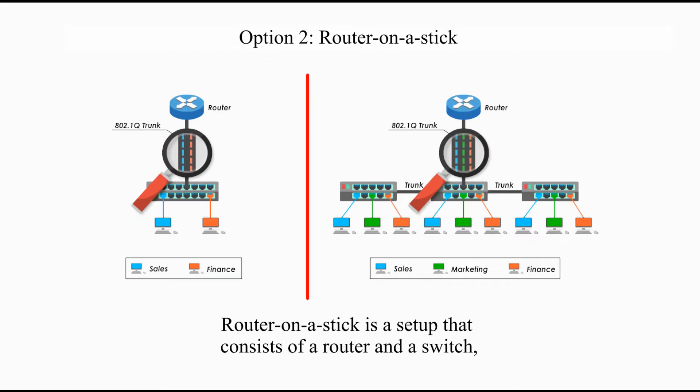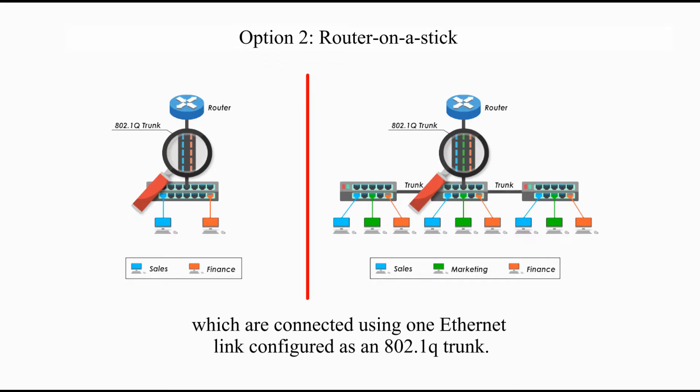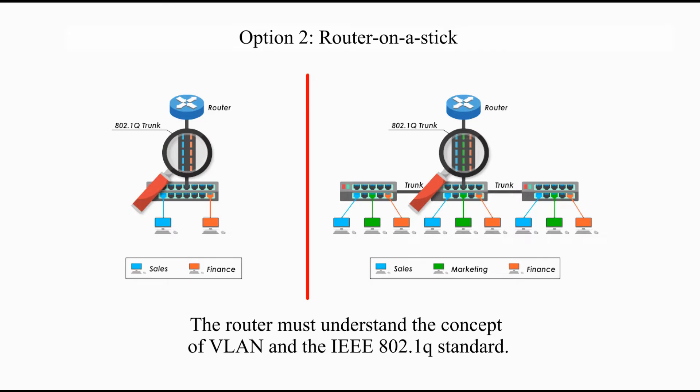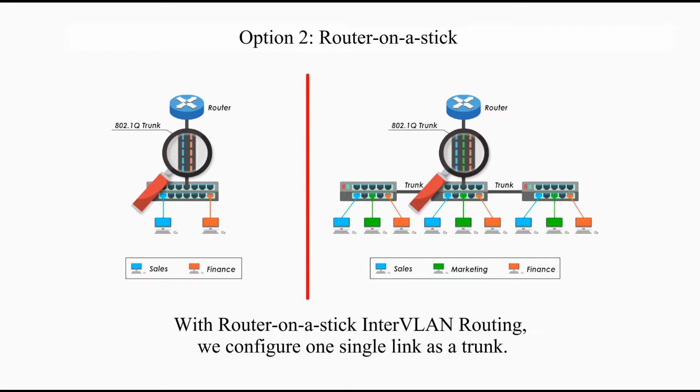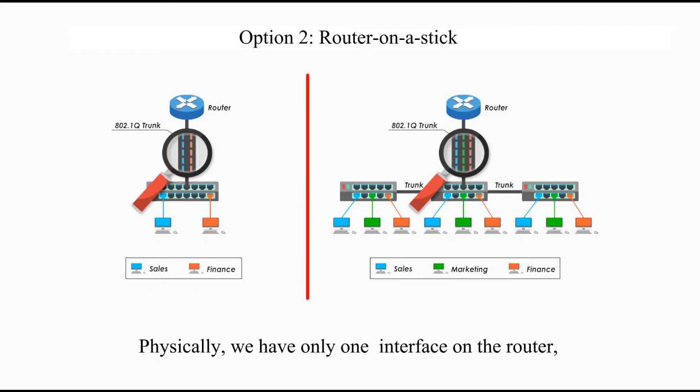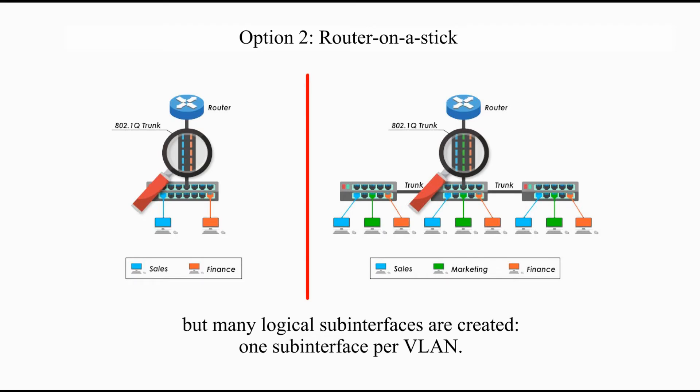Router-on-a-stick is a setup that consists of a router and a switch, which are connected using one Ethernet link configured as an 802.1Q trunk. With this approach, the router must understand the concept of VLAN and the IEEE 802.1Q standard. With Option 1, each cable going from the switch to the router is configured as an access link. With router-on-a-stick, we configure one single link as a trunk. Physically, we have only one interface on the router, but many logical sub-interfaces are created — one sub-interface per VLAN.